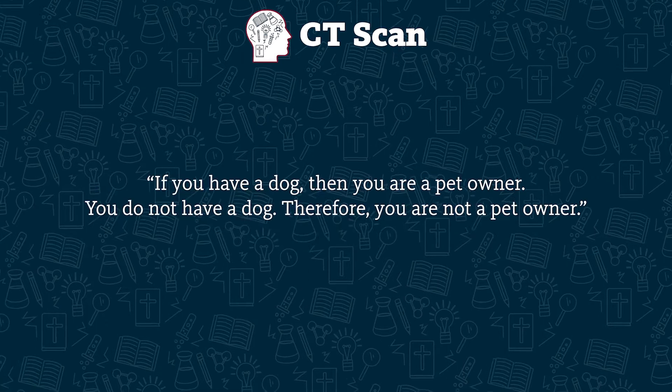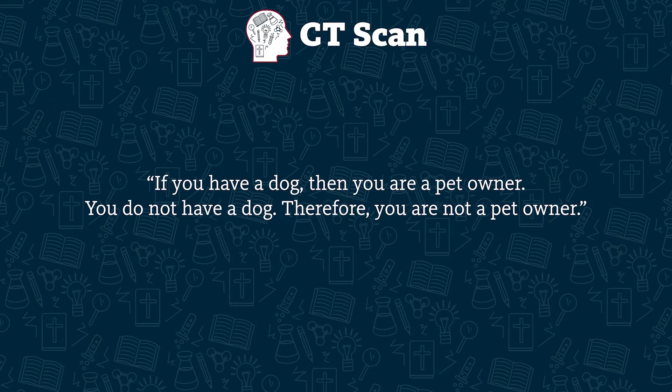For example: if you have a dog, then you are a pet owner. You do not have a dog, therefore you are not a pet owner. Does that argument sound reasonable? No — there could be other ways to be a pet owner besides having a dog. You might have a cat, or a chinchilla, or a small hairless aardvark. So the conclusion 'you are not a pet owner' does not necessarily follow from the given premises.